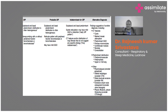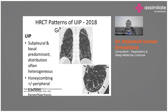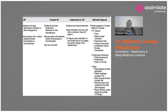Why classify CT as UIP, probable UIP, or indeterminate? If the patient has a definite UIP pattern — that is, presence of basal honeycombing and septal thickening with or without traction bronchiectasis — the patient may have IPF and biopsy is not mandatory; we label the patient as IPF, provided other diagnoses are ruled out. However, if the patient has probable UIP or indeterminate UIP, we must perform a lung biopsy to confirm.